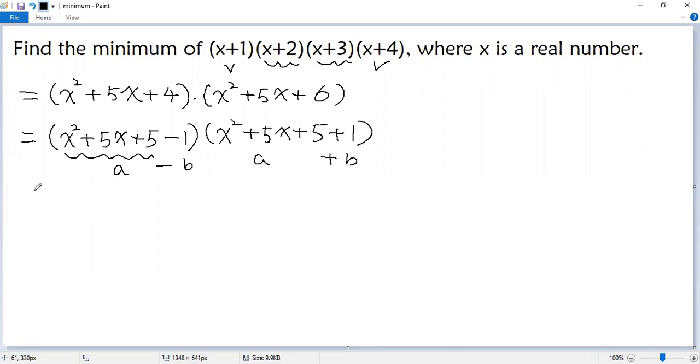So using difference of squares formula, we get a squared, so it would be x squared plus 5x plus 5 squared minus b squared, 1 squared.